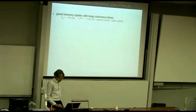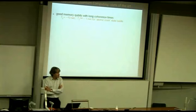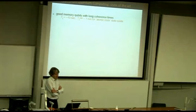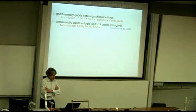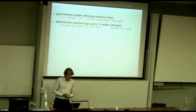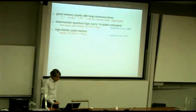Let me give some numbers about where the state of the art is currently. Ions make extremely good quantum memory qubits — the quantum coherence times T2 are the longest I'm aware of in any physical system, especially for single qubits. If you protect that with a spin echo pulse, as I showed in the previous lecture, that extends to timescales of over a minute. We can do deterministic quantum logic — not post-selecting events but really entangling states on demand. The record for a two-qubit gate fidelity using lasers is 99.3%, on a timescale of about 15 microseconds.